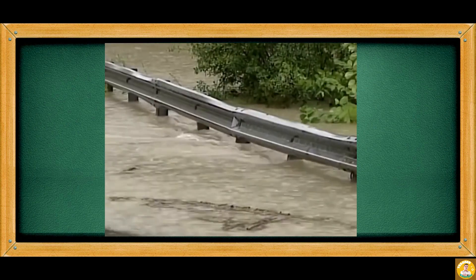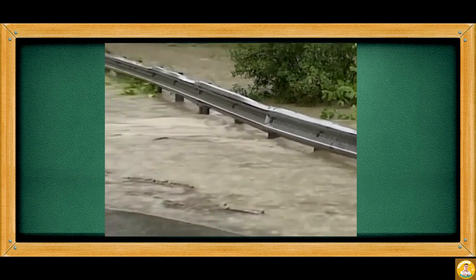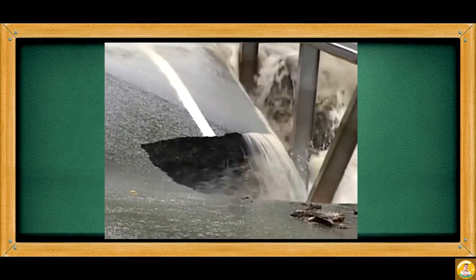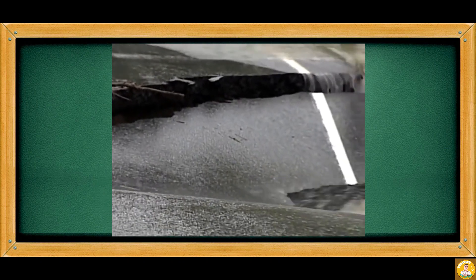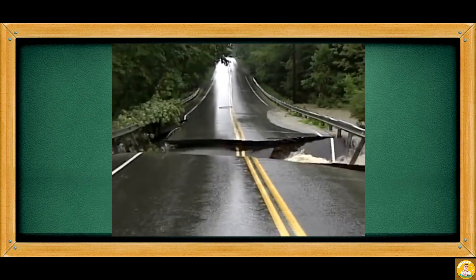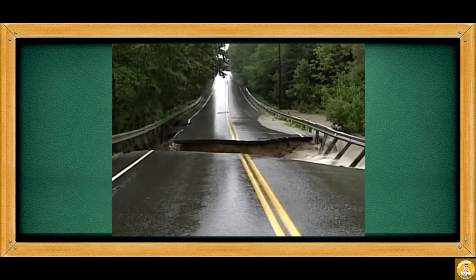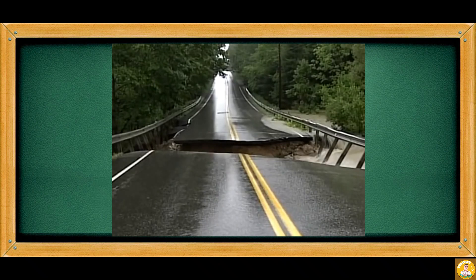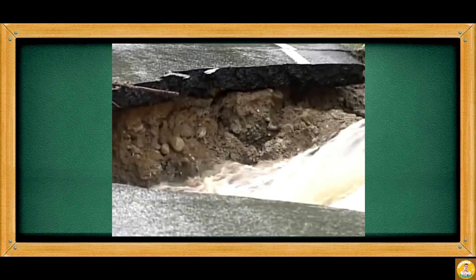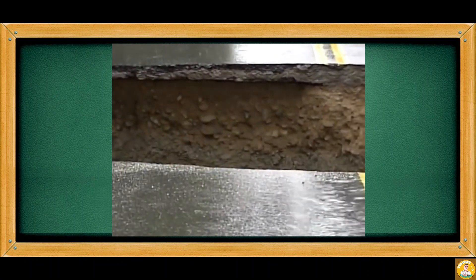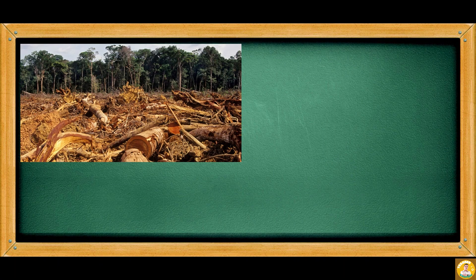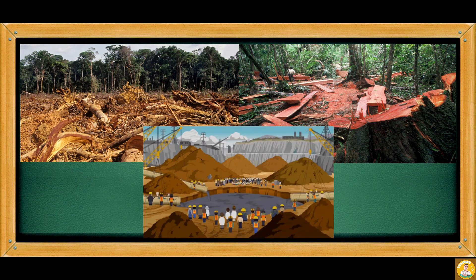Soil erosion does not only shape earth's landforms — it also affects the ecosystem, especially if it happens unexpectedly. It can destroy roads and bridges, making travel difficult and long. The repair of roads will cost the government much money. Erosion affects the land and can change its shape and size. Human activities such as deforestation, illegal logging, and quarrying also increase the effects of soil erosion on the environment.